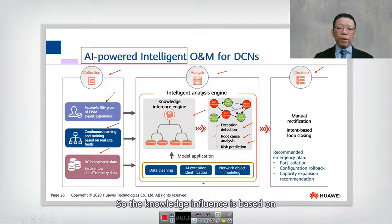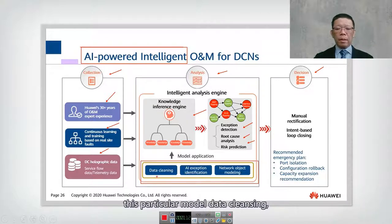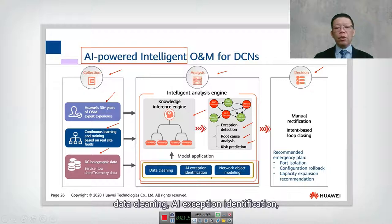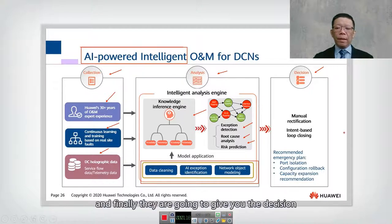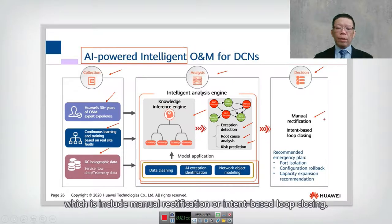The knowledge inference is based on a specific model involving data cleansing, AI exception identification, and network object modeling. Finally, it gives you a decision, which includes manual ratification or intent-based loop closing.